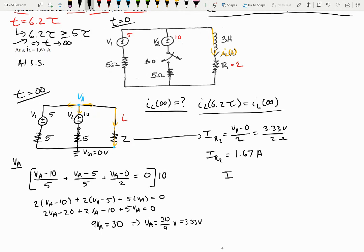And we said earlier that we know that IR2 will be equal to I of L at 6.2 tau. So our I of L at 6.2 tau is going to be 1.67 amps.